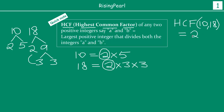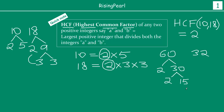Now let's take one more example. Say we want to find the HCF of 60 and 32. For 60, I can write it as 2 × 30, and 30 = 2 × 15, and 15 = 3 × 5. So the prime factors for 60 are 2, 2, 3, and 5.